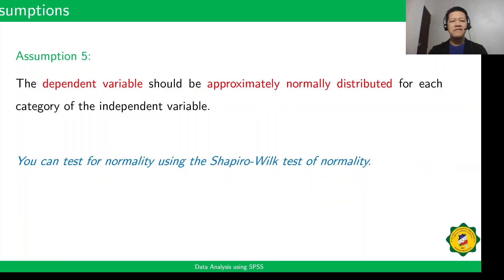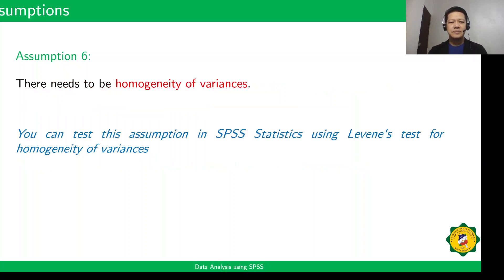The fifth assumption is that the dependent variable should be approximately normally distributed for each category of the independent variable. And the last assumption is that there needs to be homogeneity of variances.